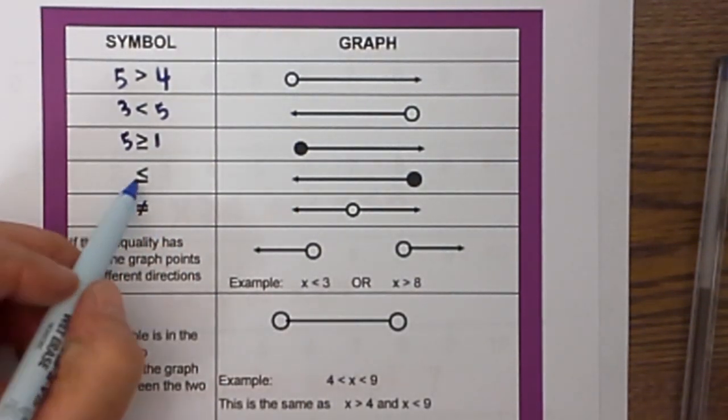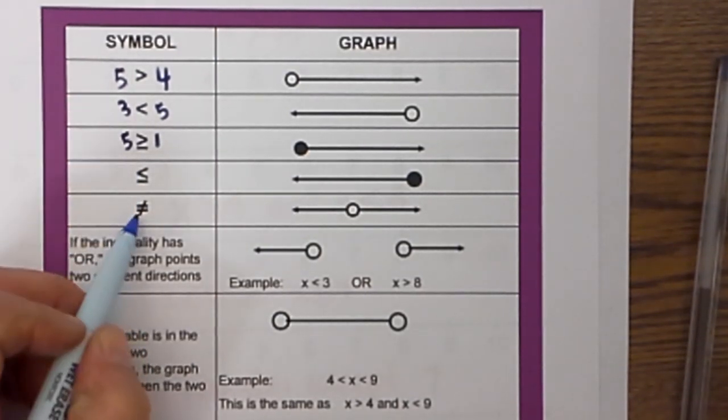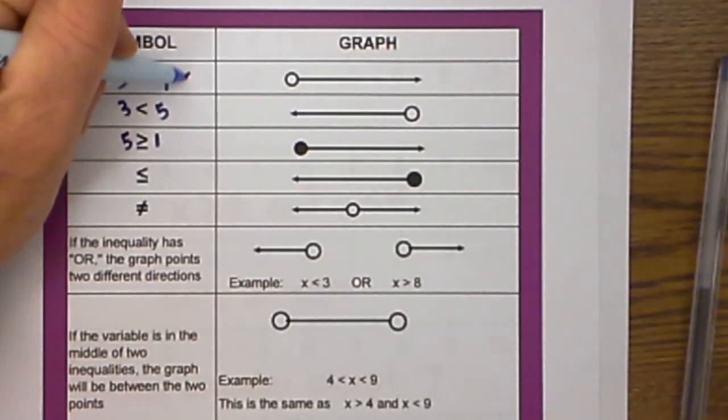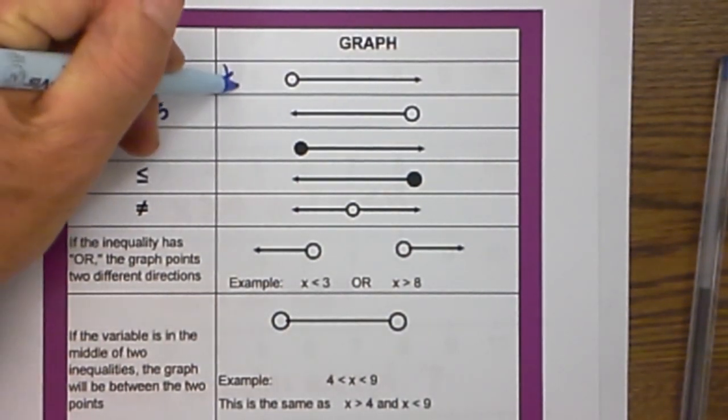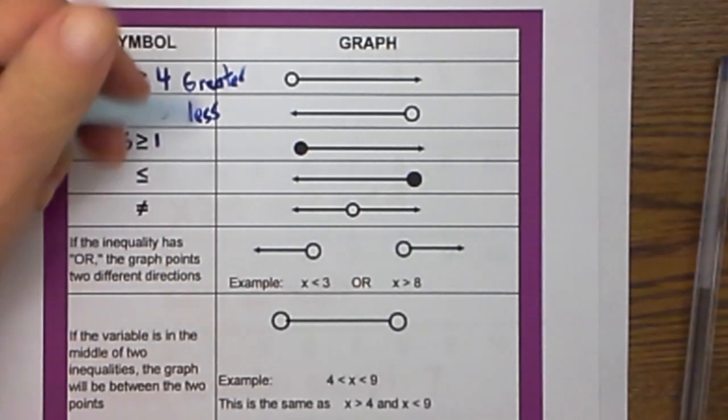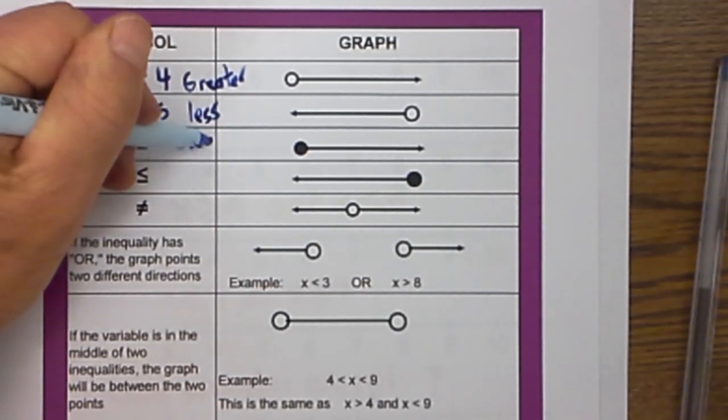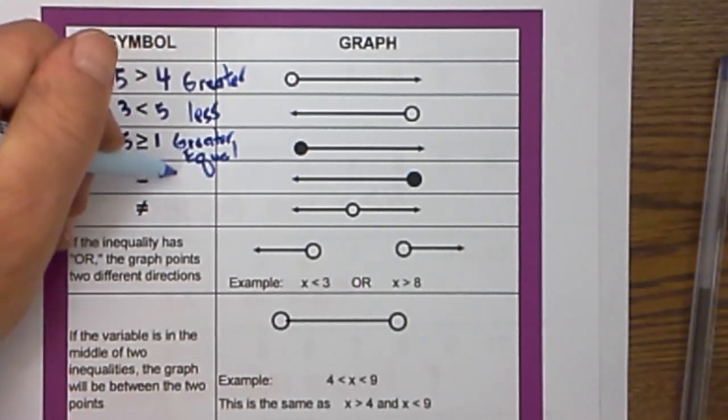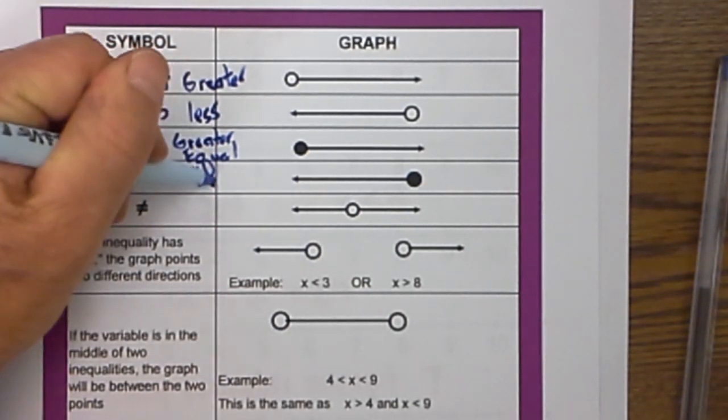This next one is less than, and this is not equal to. So let's go back again. This one is greater, less, greater than and equal. This is less than and equal.